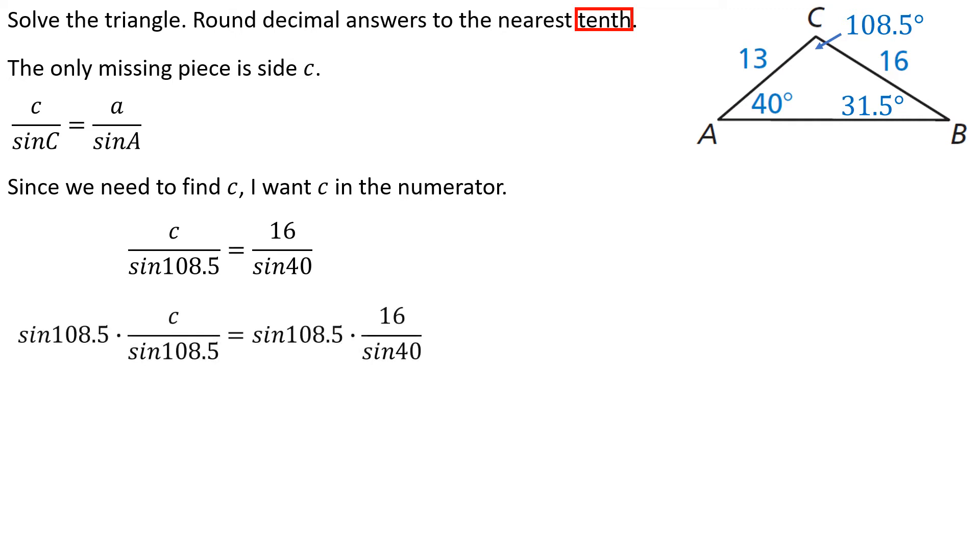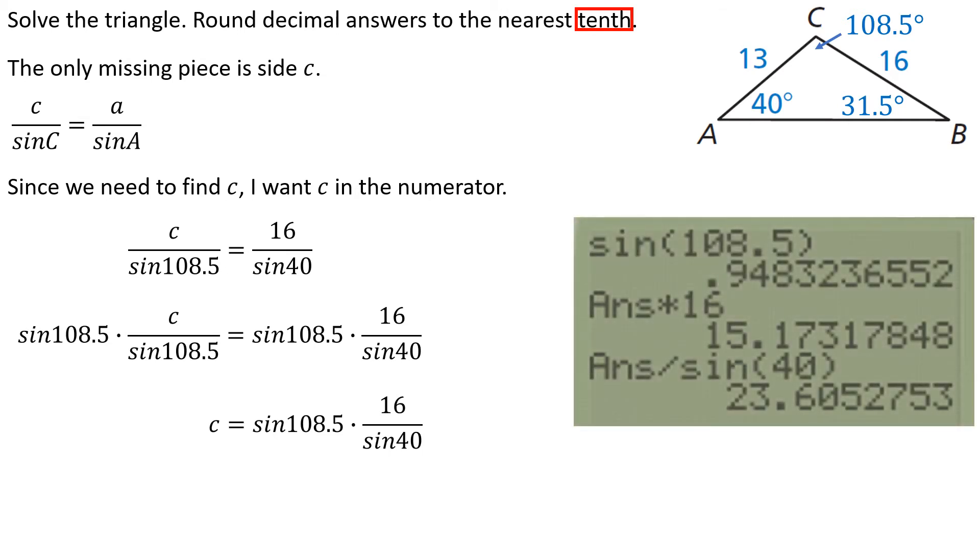How do I isolate the variable C? Well, let's multiply both sides by the sine of 108.5. Again, time to grab that calculator. I want to do the sine of 108.5. Take that answer, multiply it by 16. Take that answer, divide it by the sine of 40. I come up with a number pretty close to 23.6 when I round off the nearest tenth. And that is the third side.